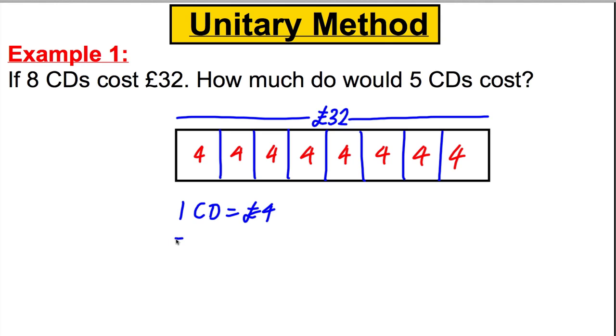So what would 5 CDs be worth? 5 CDs, well it would be 5 lots of this. So 4, 8, 12, 16, 20, it would clearly be £20 and there you go, you've done a difficult question. Or you could have just in this case coloured them if you wanted, so it would be 1, 2, 3, we want to colour 5, like that.